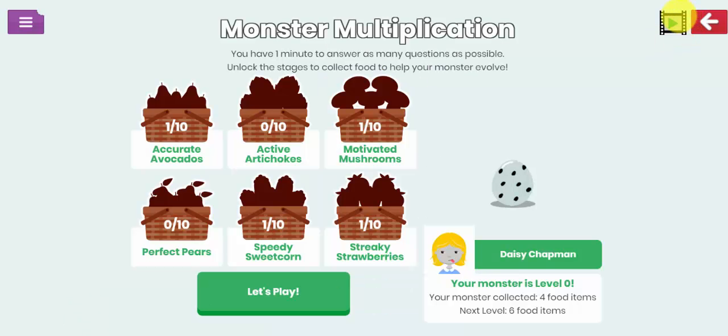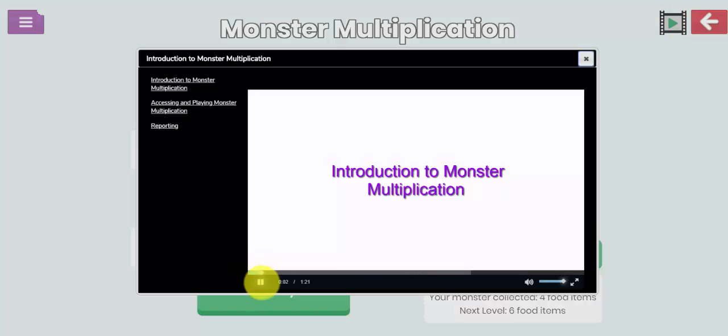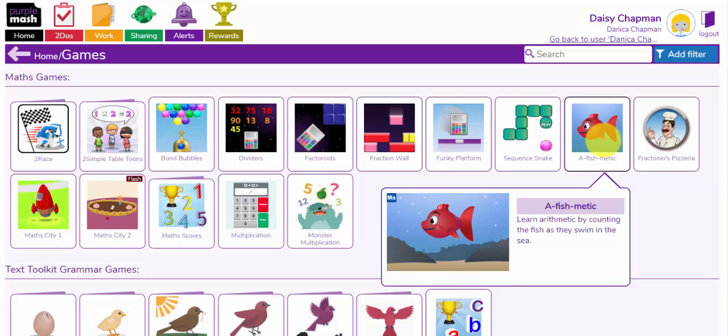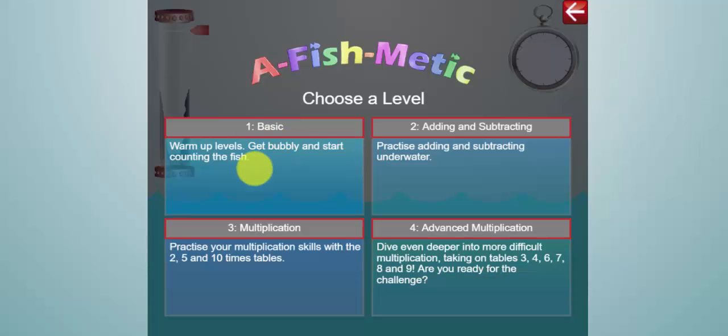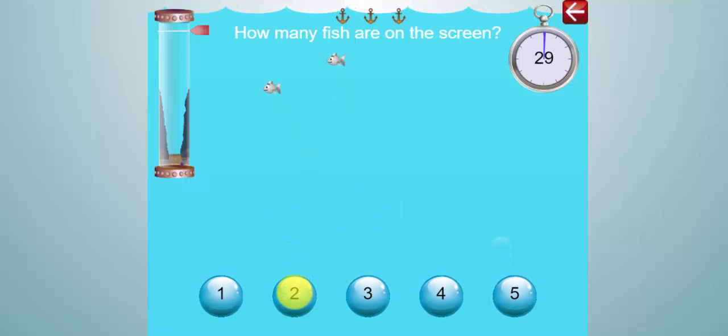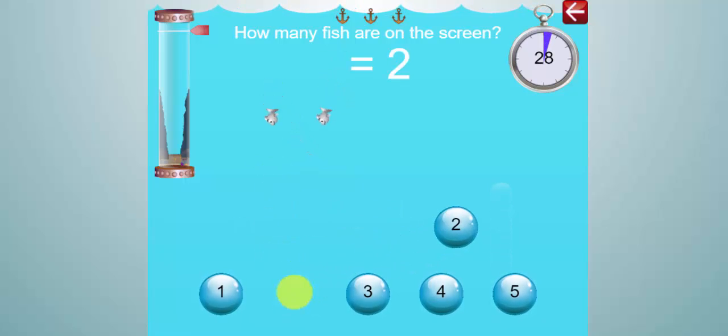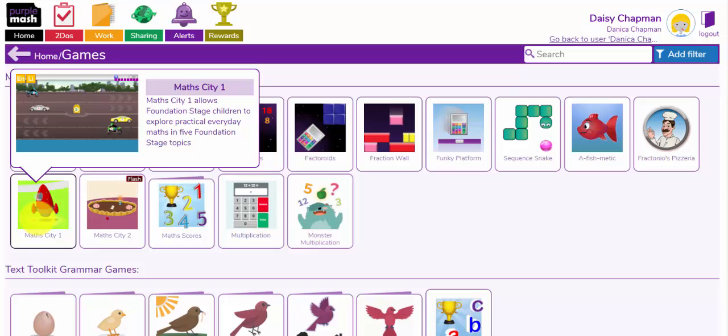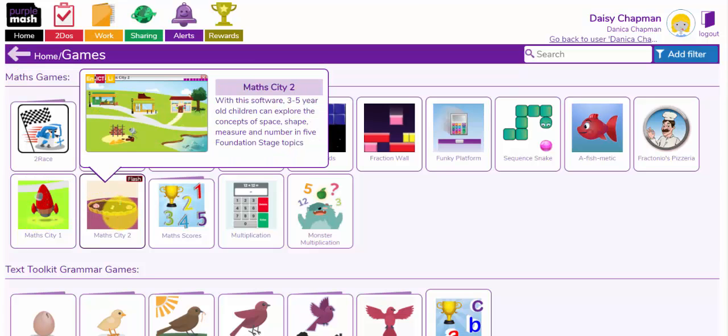Any of the maths games in Purple Mash will have a little guide video here next to the exit button. And you can watch how to use these games with your children. Let's have a look at Fishmatic. Fishmatic can be used with reception children for basic counting, or Year 1s and 2s with basic addition and subtraction, or further up the year levels from Year 2 up with multiplication. Let's have a look at the basic level here for counting. How many fish are on the screen? There are two. Now I have a 30 second timer to see if I can count how many fish are on the screen. If your children are in nursery or reception, then Math City 1 and Math City 2 will enable them to practice the math skills for early years.